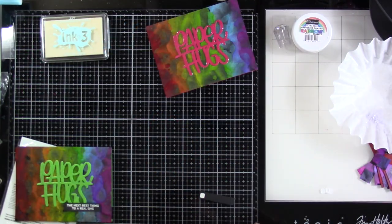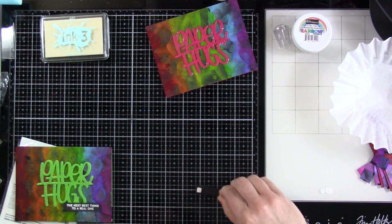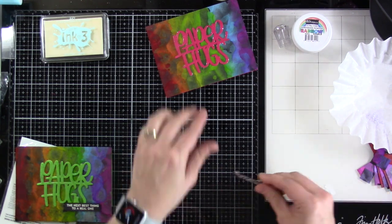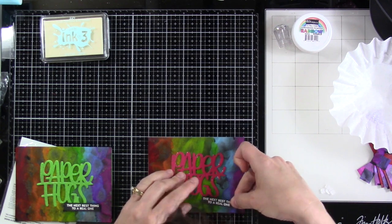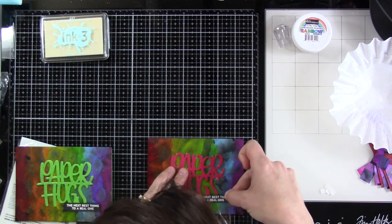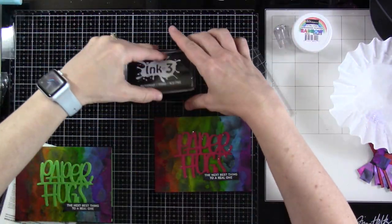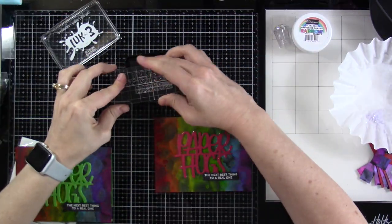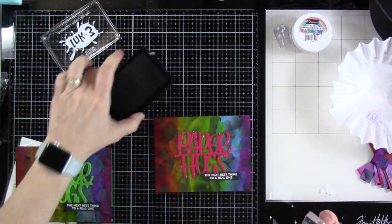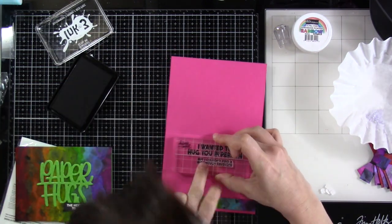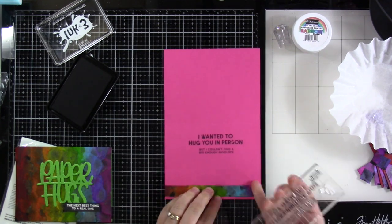I have some sentiments. These are the ones I cut. These come from the Simon Says Stamp Paper Hug Stamp Set. I didn't show it because I decided to use it last minute, but I will have it linked down below. And it says paper hugs, the next best thing to a real one. And then on the inside, I'm going to stamp, I wanted to hug you in person, but I couldn't find a big enough envelope. I think that's so cute. So I'll stamp that on the inside of each of these cards.